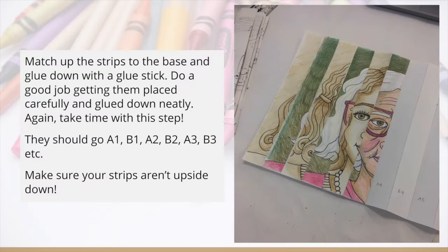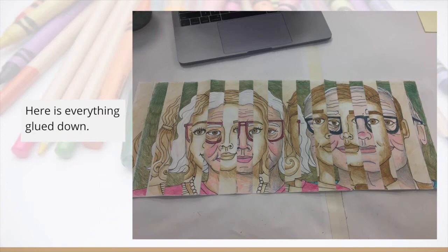You're then going to match up the strips to the base and glue down with a glue stick. For each of the strips, it has a label on the back: A1, B1, A2, B2. Then you line it up with your accordion-folded piece of paper. Notice how A then B, A then B, and the numbers are also in numeric order. You want to make sure the strips aren't upside down or mixed up, so it's really important to stay organized. Here is everything glued down — it's nicely and flatly glued with nothing popping up. I really think the reason she was able to do this so neatly is because the paper was flat. I would strongly recommend colored pencil, marker, Sharpie — things like that — instead of water-based materials.